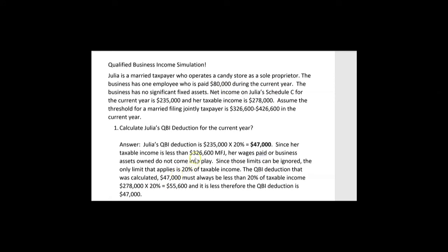If her taxable income had crept up to over $326,600, then we would have to worry about wages — wages might come into play. But right now they don't, because her taxable income is below $326,600. So the only thing we had to do was take 20% of the Schedule C net income of $235,000, getting $47,000, and confirm that's less than 20% of taxable income of $278,000, which is $55,600. Yes, $47,000 is the QBI deduction and she gets it in full.